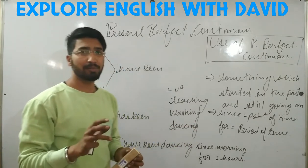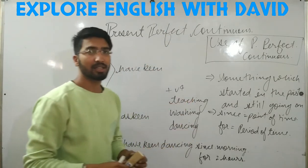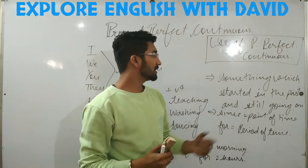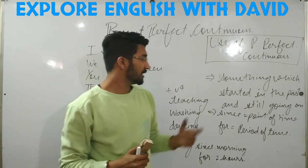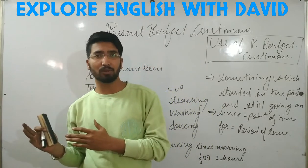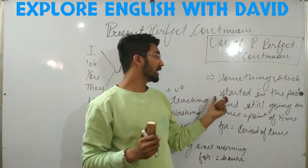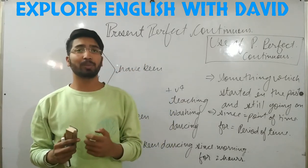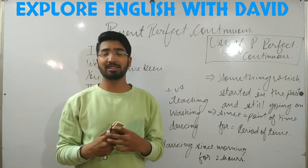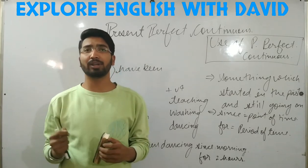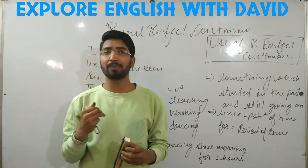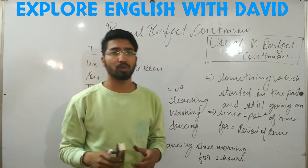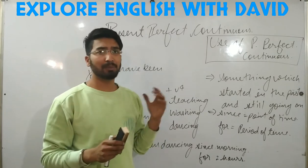Present Perfect Continuous Tense is the mixture of Perfect and Continuous Tense. The first use is for something which started in the past and still continues. Any action which started in the past and has continued up to now. For example, in Hindi when I say 'I am studying since morning', it means the action started in the morning and is still continuing now. So I would say: I have been teaching since morning. That sentence is called Present Perfect Continuous Tense.